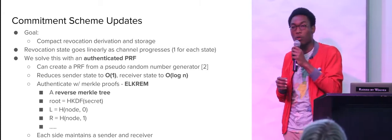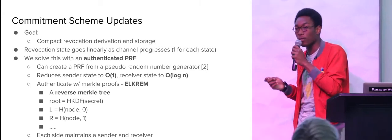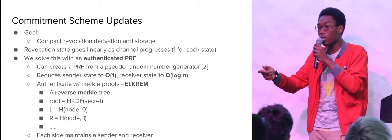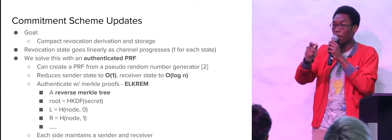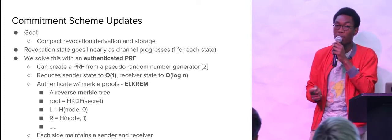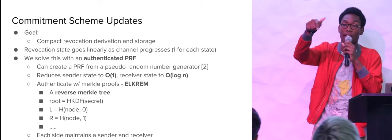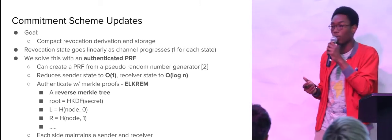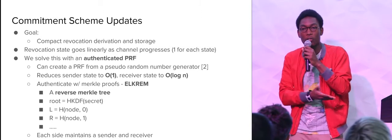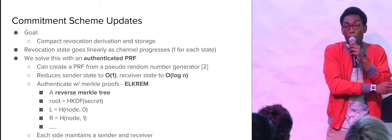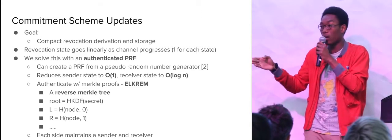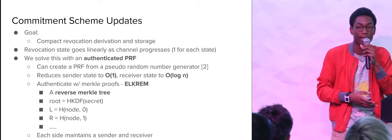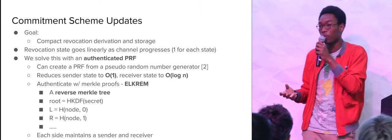One thing I mentioned is the revocation scheme. For every single state you move forward, you need to provide a revocation of that prior state. This kind of grows linearly — if we're doing a billion updates, I have basically a billion stored values. That can be limiting because I need a lot of storage to do this.